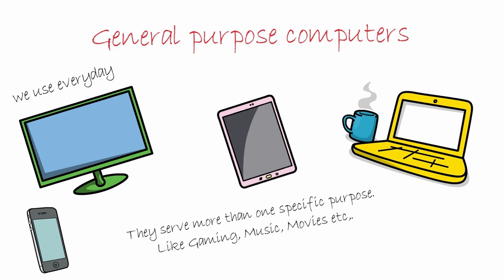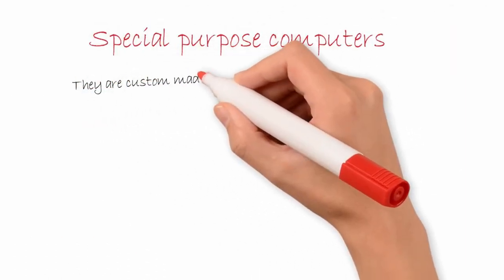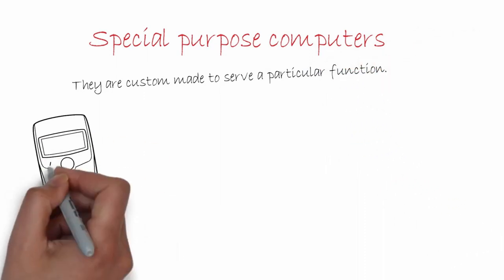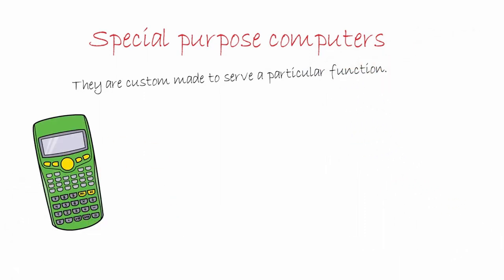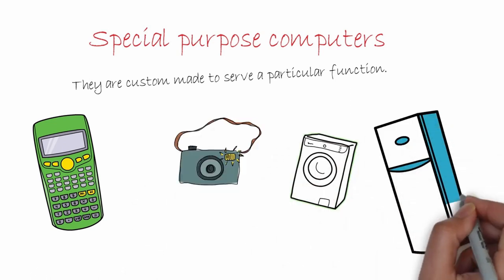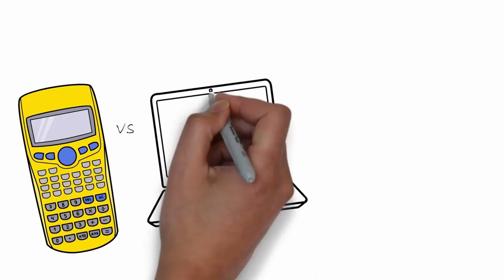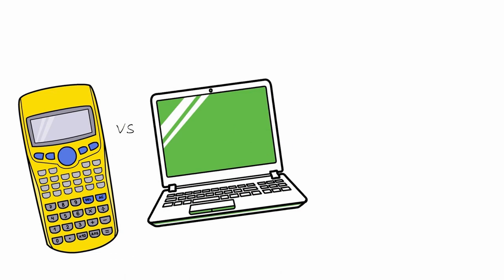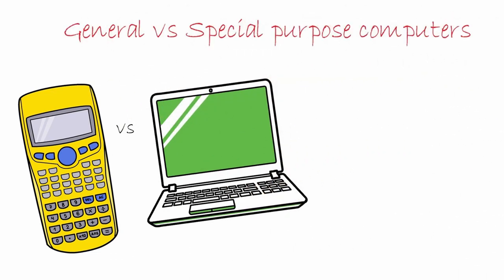Now that we've seen what general purpose computers are, let's get back to special purpose ones. Special purpose computers are very specific — they serve a particular function. A popular example is a calculator: its one and only job is to do calculations. Now the question is, what is the need of a calculator when we already have a computer?